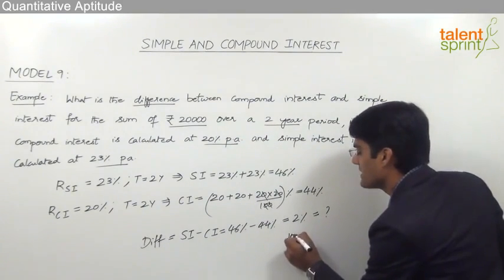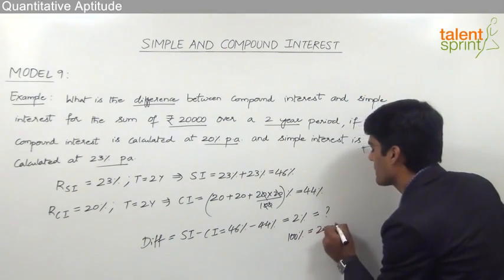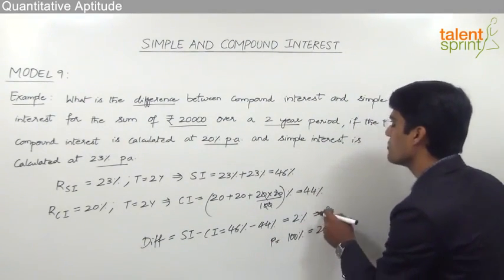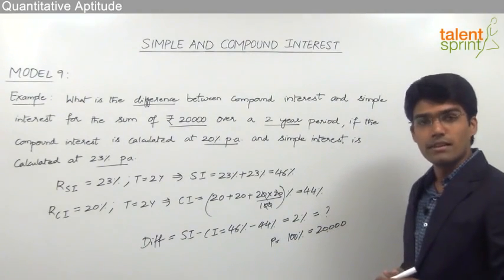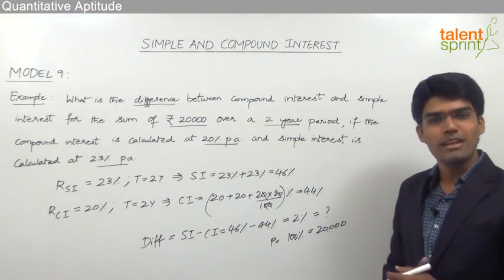And this 2% has to be calculated. We know that principal is 20,000. That means 100% is equivalent to 20,000. So if 100% is 20,000, 2% will be how much? We know that 1% of 20,000 is 200 rupees, so 2% would be 400 rupees.